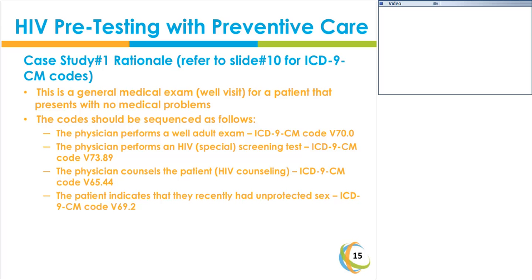The rationale: V70.0 reflects the well visit exam, V73.89 is the special screening code, V65.44 is the counseling code, and V69.2 represents high-risk sexual behavior. It is extremely important to note that V69.2 would never be sequenced as the principal diagnosis. Because the physician performed a well visit along with special screening and counseling, V69.2 is listed last in the sequence.